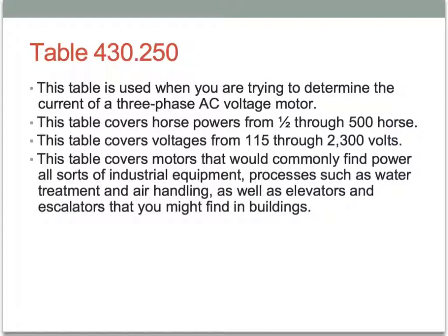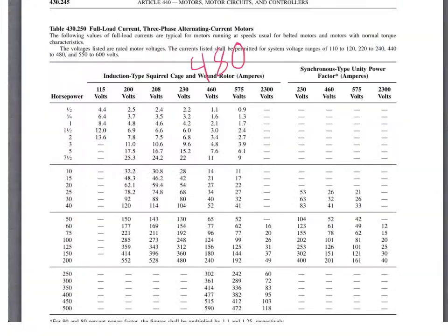There are many, many uses for three phase motors, and Table 430.250 tells us the current values each will use. Looking at the table, horsepower is on the left-hand side with several voltage columns to choose from. One column I relabeled 480 because that's a common voltage, though the code uses 460 as the nominal. We'll also look at quite a few applications of 208 three phase, which is a popular voltage on the wye system.